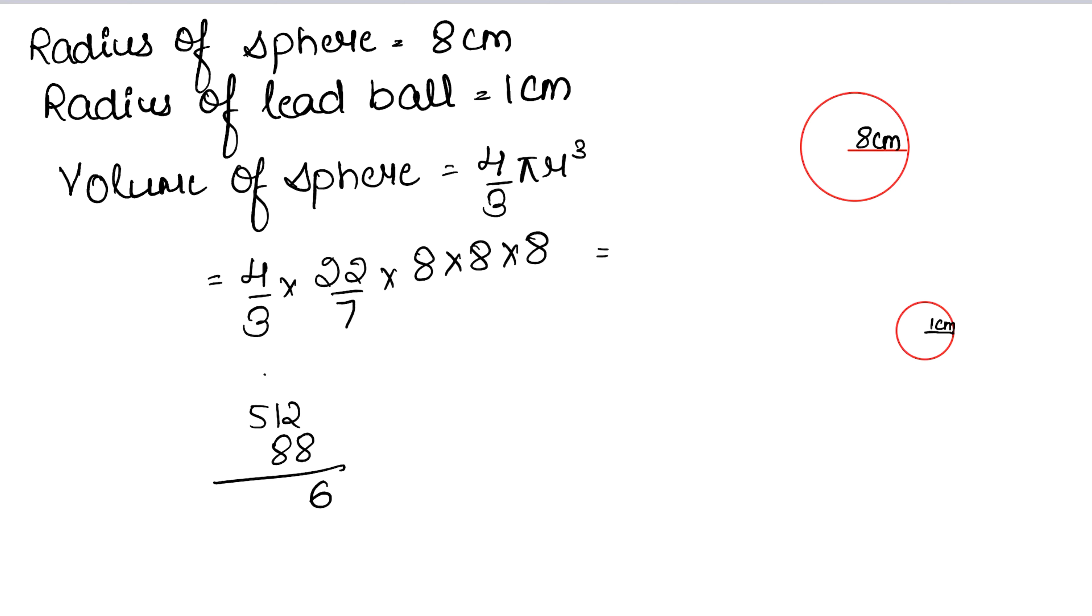Carry 1, 8, 1s are 8 and 9. 8, 5s are 40. So we have 6, 9, 0, 4. Then 6, 15. Carry 1, 10. Carry 1, 5 and 4. So we have 4, 5, 0, 5, 6 upon 21 cm cube. This is the volume of the big sphere.